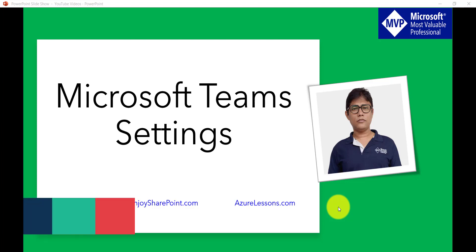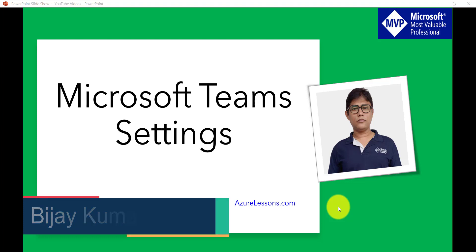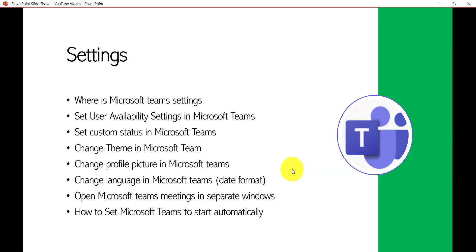Hello and welcome to the channel. My name is Vijay and I am a Microsoft MVP specialized in SharePoint. In today's video we are going to discuss a few Microsoft Teams settings. We will see where the Microsoft Teams settings are, the options. We will see how we can set user availability, how we can set custom status, how we can change theme, profile picture, language, and how Microsoft Teams meetings will open in a separate window. We will also see how we can set Microsoft Teams to start automatically whenever you open the system.